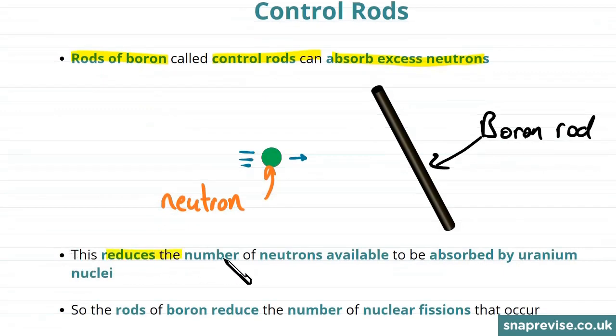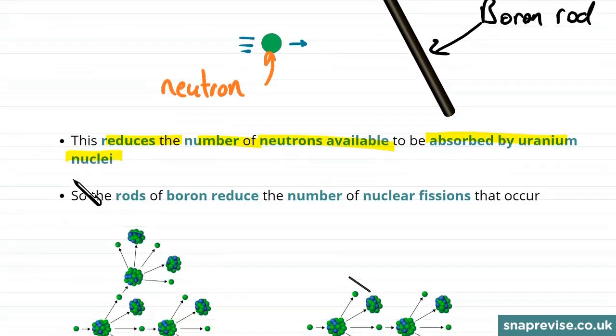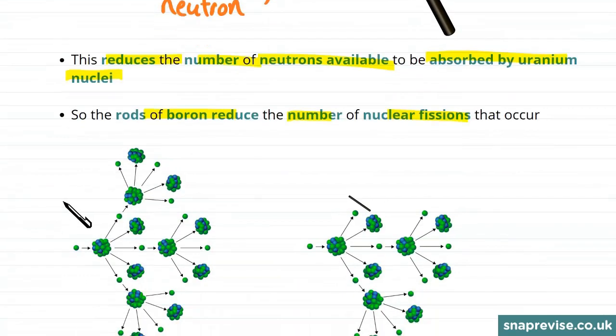So the idea of this is to reduce the number of neutrons that are available to be absorbed by uranium nuclei kicking off the fission. So the rods of boron reduce the number of nuclear fissions that occur.